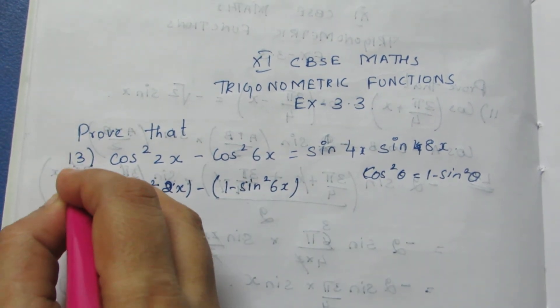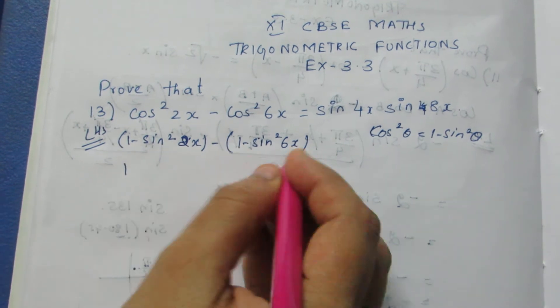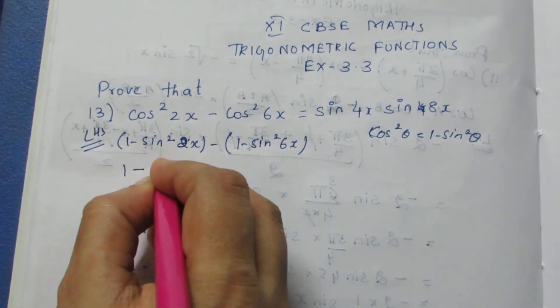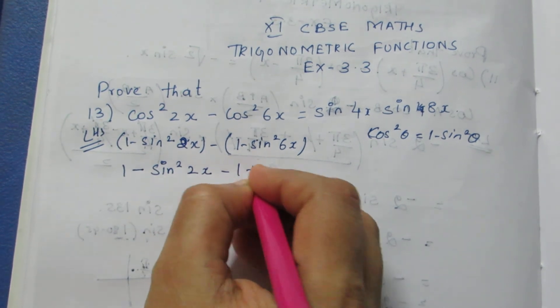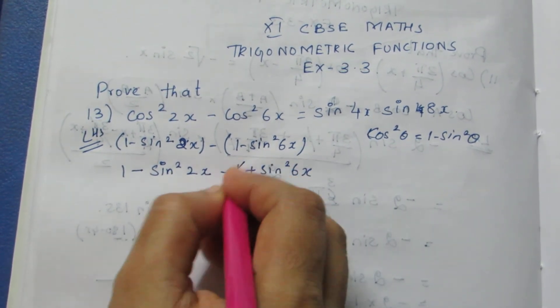Now I'm going to take the minus sign inside: -sin²2x - 1 + sin²6x. The 1s get cancelled.